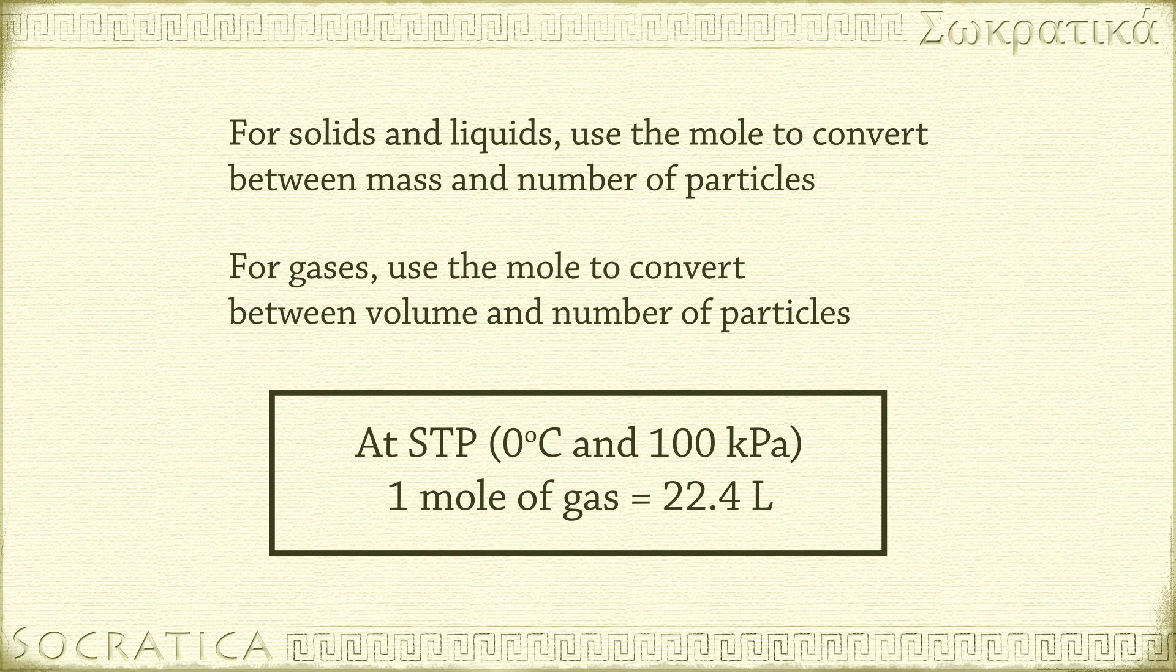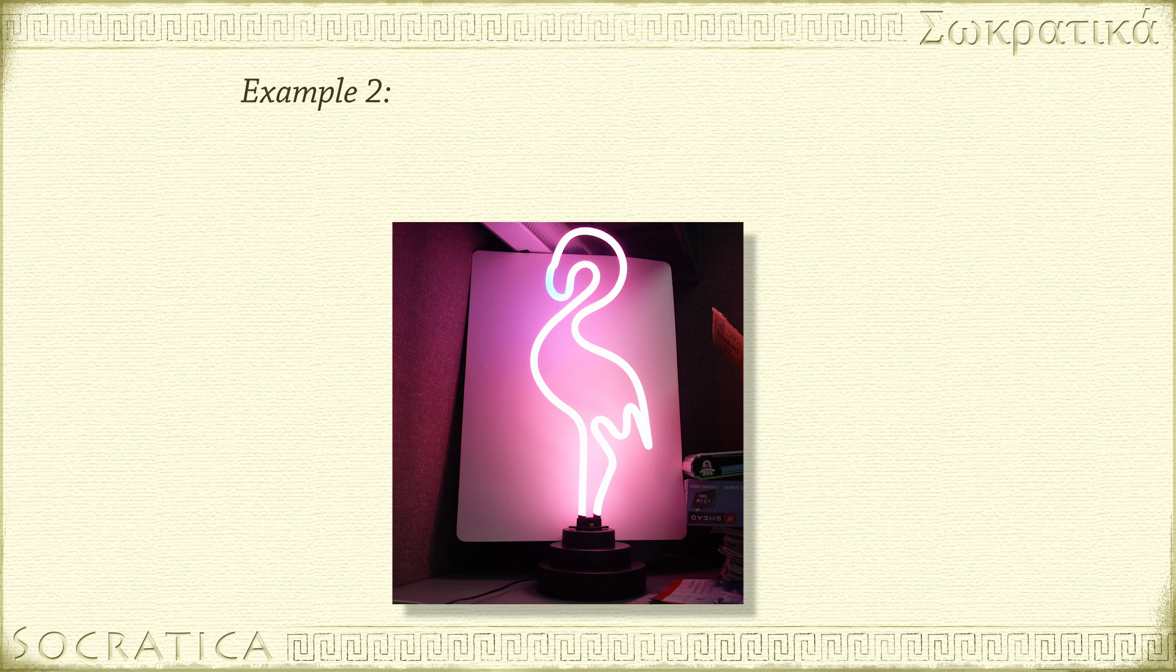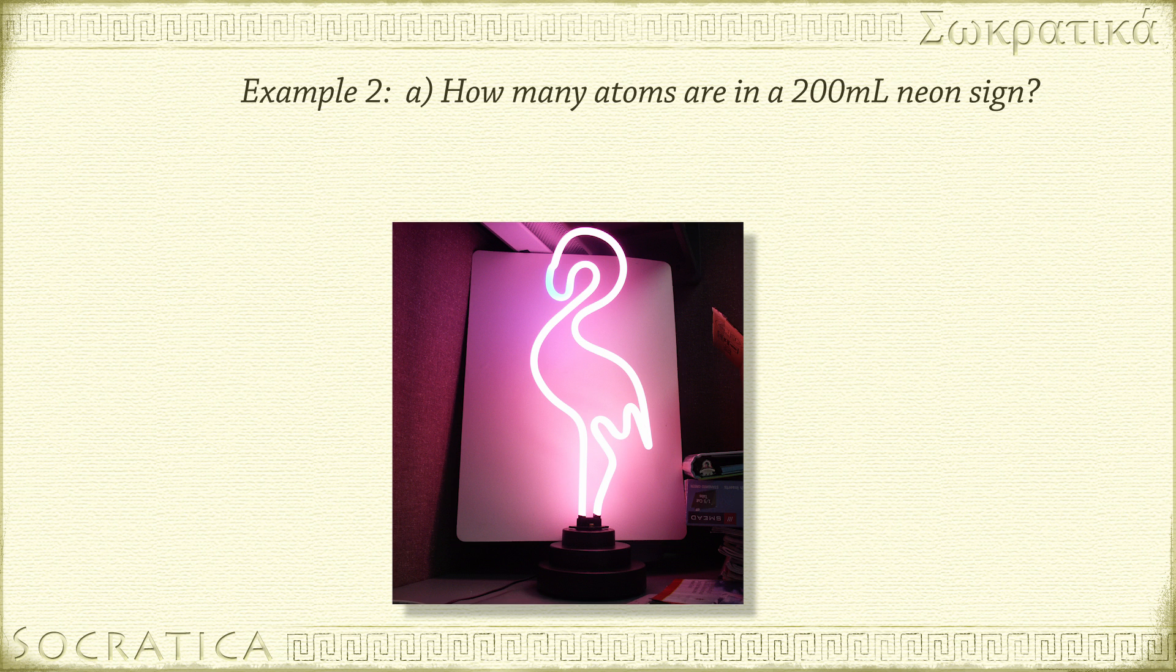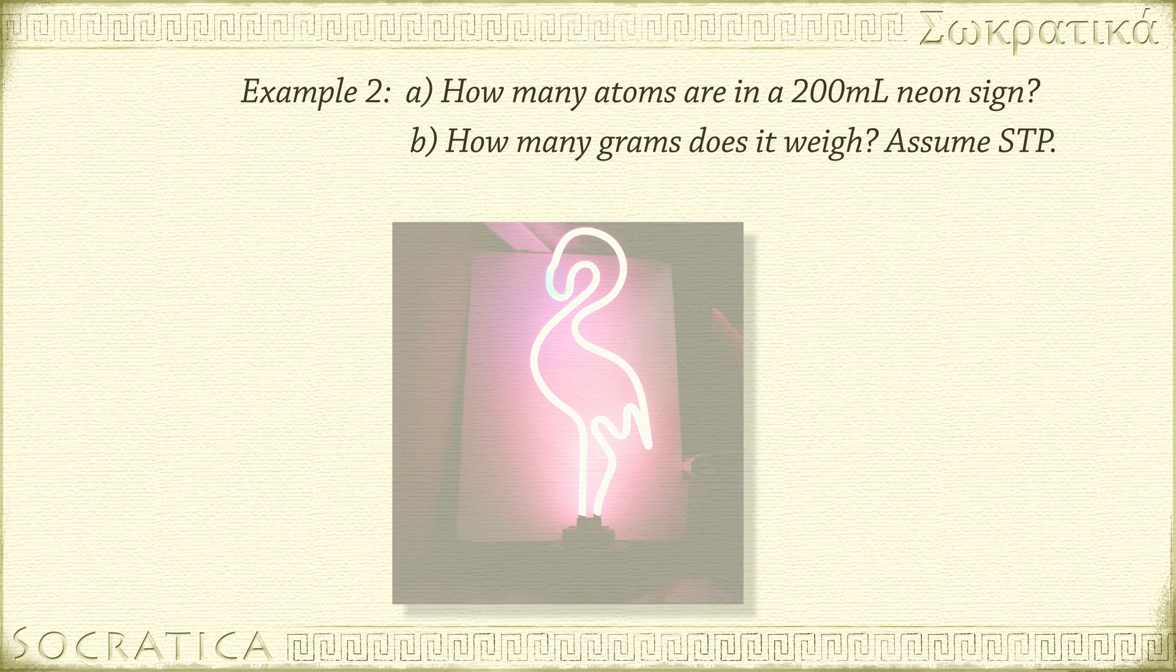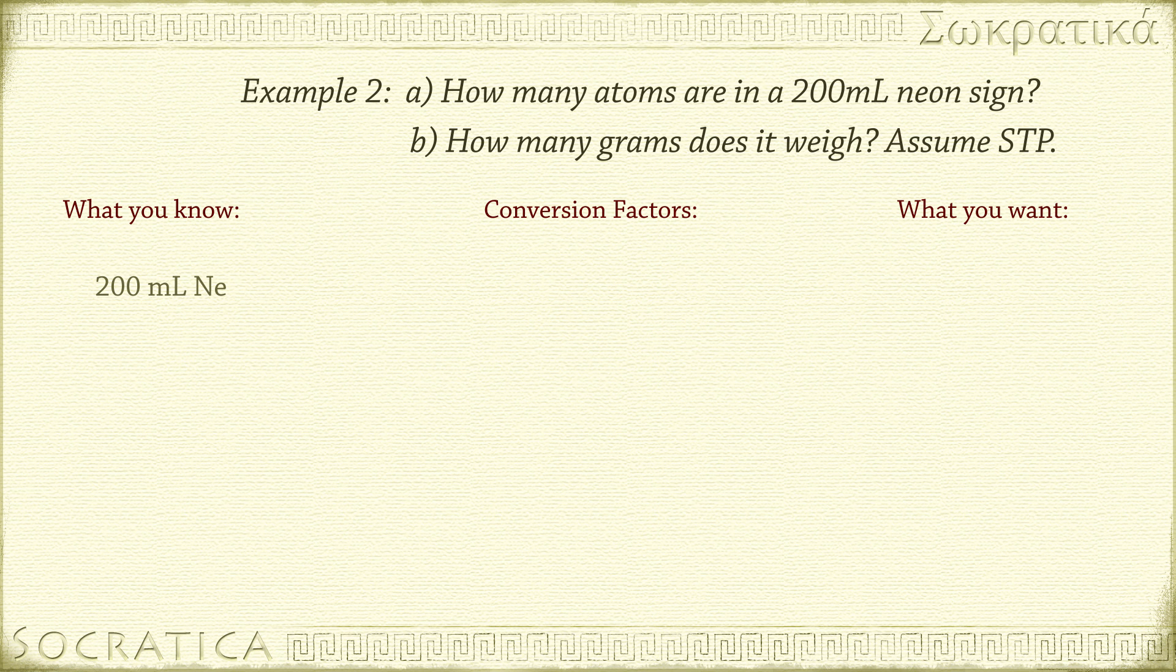Let's see an example of a conversion that uses this fact. A neon sign holds 200 milliliters of neon gas. How many atoms of neon is that? And how many grams does the neon weigh? Assume STP. Start with what we know, 200 milliliters of neon. Leave a big gap for conversion factors, and end with what we want, atoms of neon.